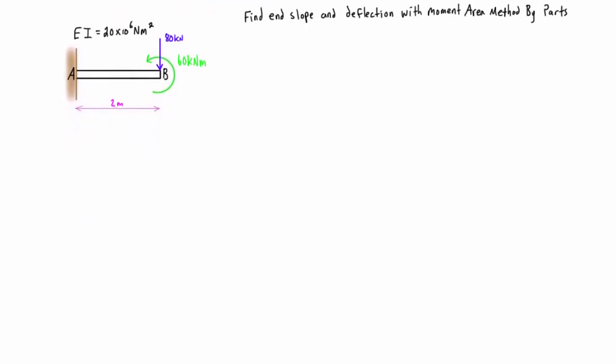What we want to do in this video is solve this by parts. When we do it by parts we basically take the method of superposition and say that this system, this cantilever beam with a single point load and an applied moment acting on it, is the sum of the system with just the point load acting on it and the system with just the applied moment, assuming everything else is held constant.